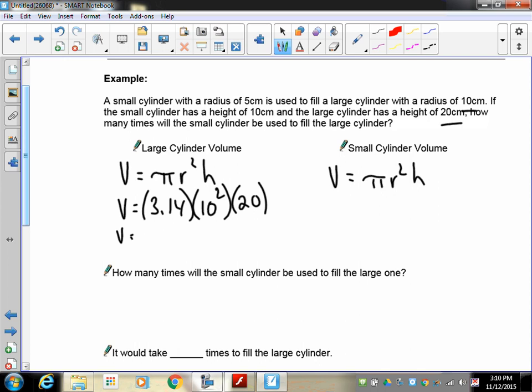So 3.14 times 10 squared times 20 is going to give us a number. And I don't have my calculator on me at the moment. There we are. Okay. So 3.14 times that by 10 squared. That's 10 times 10 times that by 20 means that we have 6,280 centimeter cubes. All right. So we have a fairly large, you know, bucket there.